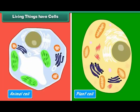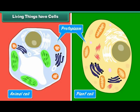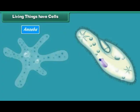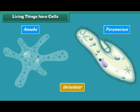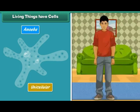The cells are made of protoplasm, or living matter. All body functions and properties of life are due to protoplasm. Some living organisms like amoeba and paramecium are made up of one cell — they are called unicellular. Organisms made up of many cells are called multicellular.